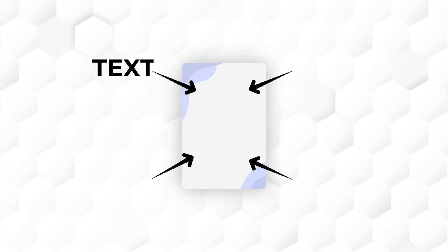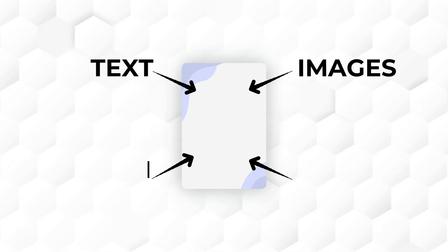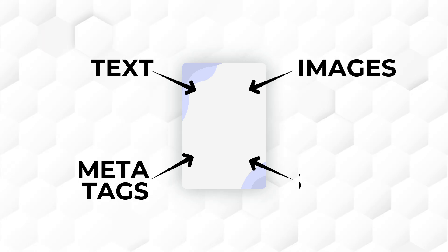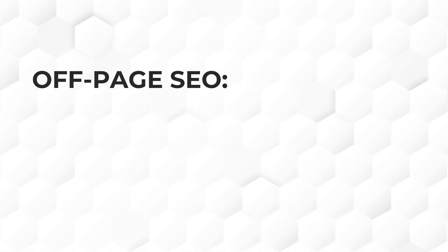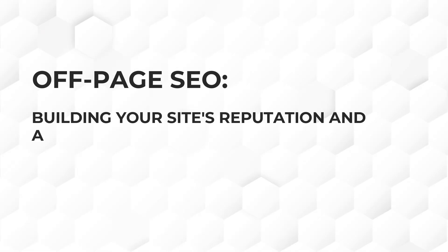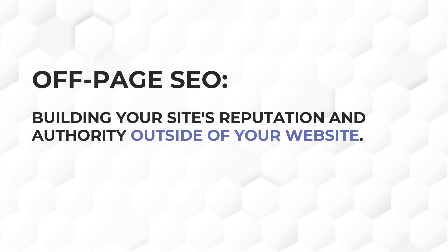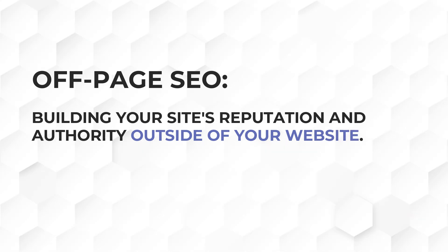It is everything you control directly on your site like the text, images, meta tags and links. Now, off-page SEO, on the other hand, is all about building your site's reputation and authority across the internet. It focuses on activities outside of your website, and we will talk about what they are later in this video.